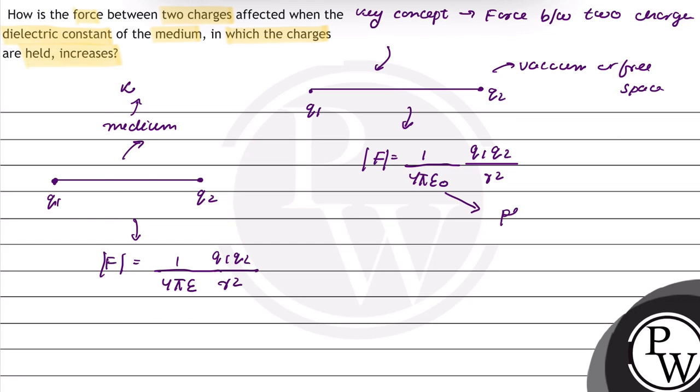In this case, epsilon naught is the permittivity of free space. And in this case, epsilon is the permittivity of the medium which has dielectric constant k. We know that permittivity of a medium epsilon is equal to dielectric constant multiply epsilon naught.